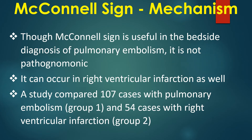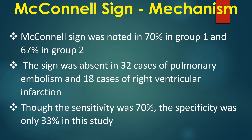Though McConnell sign is useful in the bedside diagnosis of pulmonary embolism, it is not pathognomonic — it can also occur in right ventricular infarction. A study compared 107 cases with pulmonary embolism and 54 cases with right ventricular infarction. McConnell sign was noted in 70% of the pulmonary embolism group and 67% of the right ventricular infarction group. Though the sensitivity was 70%, the specificity was only 33% in this study.